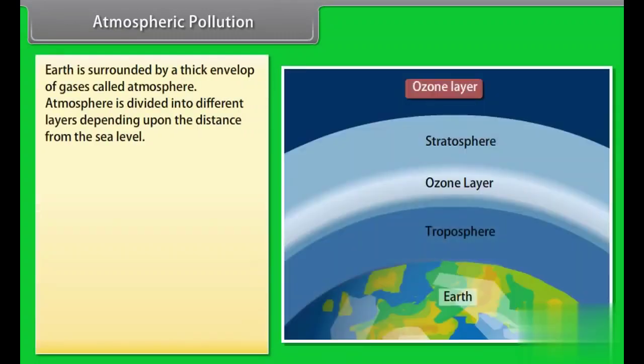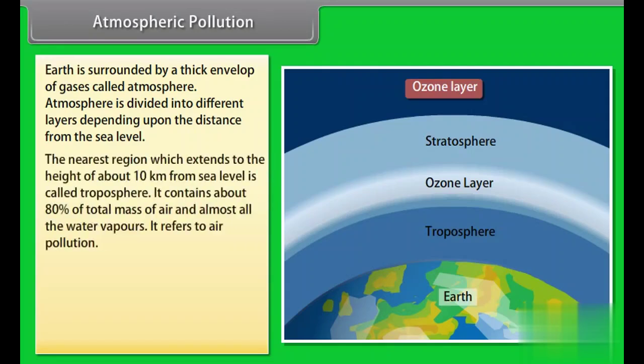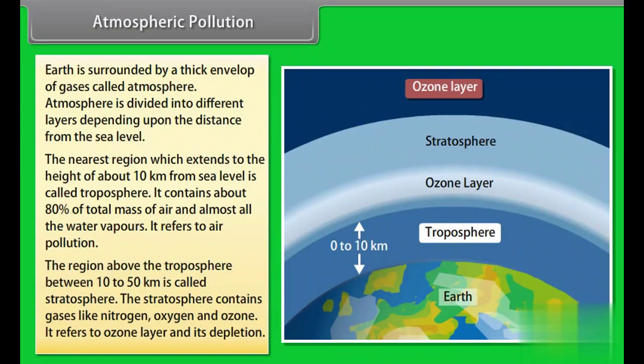Atmospheric pollution. Earth is surrounded by a thick envelope of gases called atmosphere. Atmosphere is divided into different layers depending upon the distance from the sea level. The nearest region which extends to the height of about 10 km from the sea level is called troposphere. It contains about 80% of total mass of air and almost all water vapors. It refers to air pollution. The region above the troposphere between 10-50 km is called stratosphere. The stratosphere contains gases like nitrogen, oxygen, and ozone. It refers to ozone layer and its depletion.